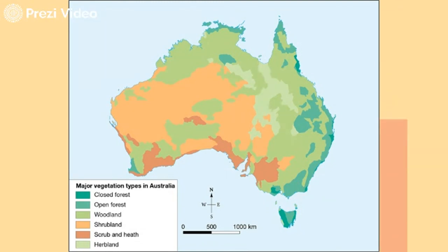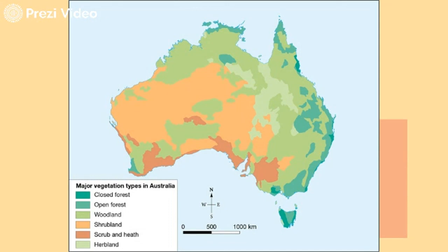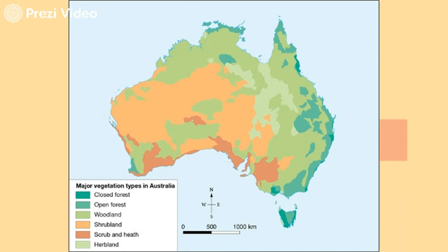Now that I've talked you through some of the ways you can look at a map and identify key features, I'm going to get you to apply some of this knowledge to some questions. You can grab one of the handouts I'll provide in class, or if you prefer to do it on your computer, there is a Schoology task for you to complete as well. Good luck and I hope this has been helpful.